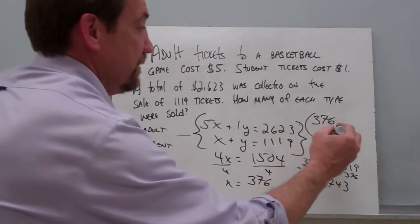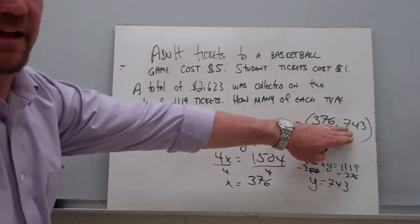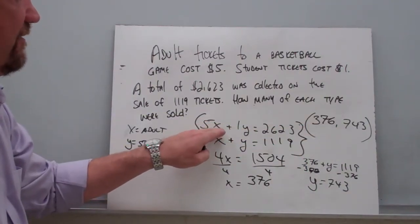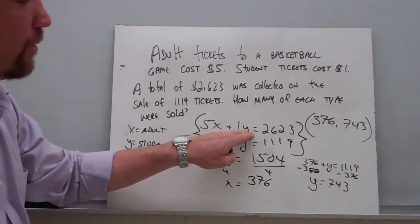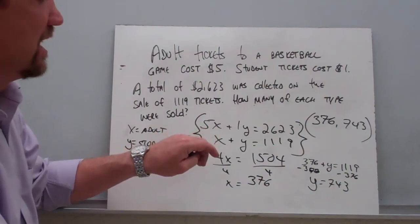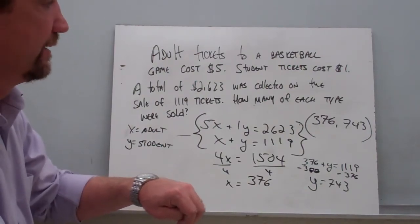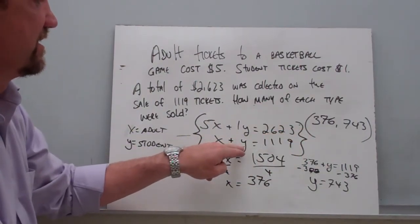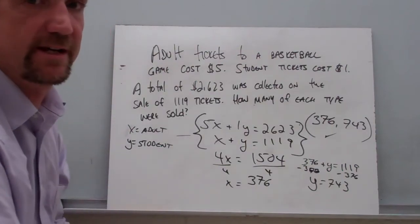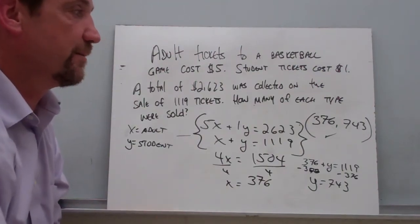Our Y value is going to be 743. You could check this solution: plug in 376 for X and 743 for Y. 5 times 376 plus 1 times 743 equals 2,623, and 376 plus 743 equals 1,119. This solution checks on both equations, so we know that is the correct solution to this system of equations.